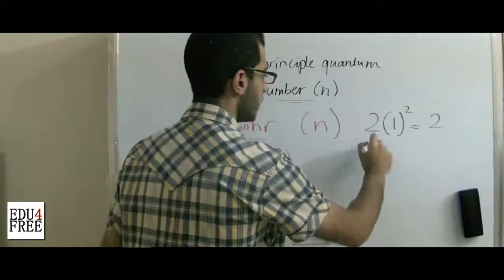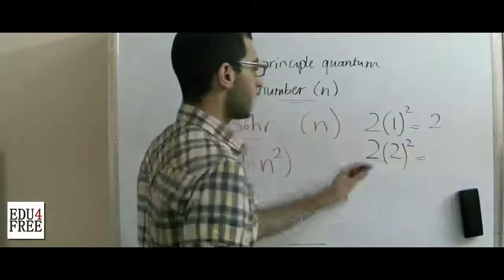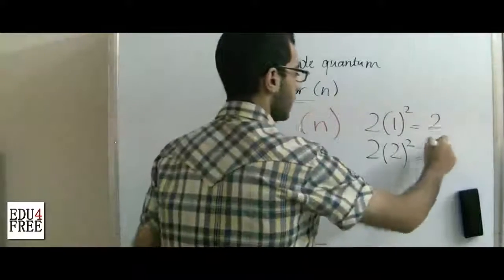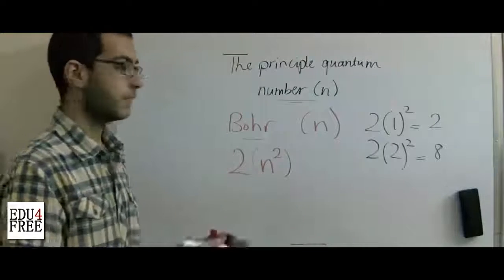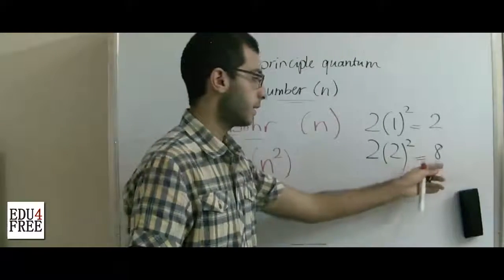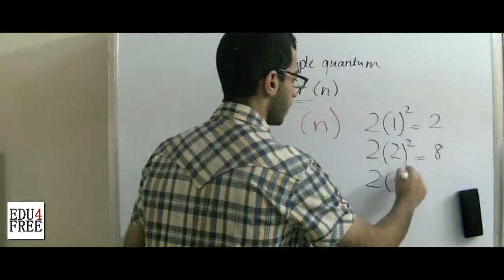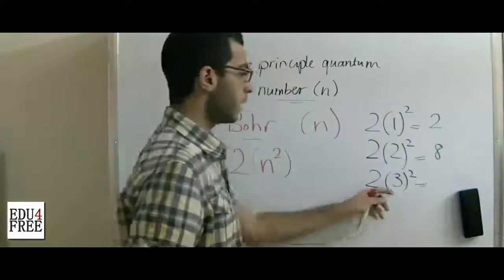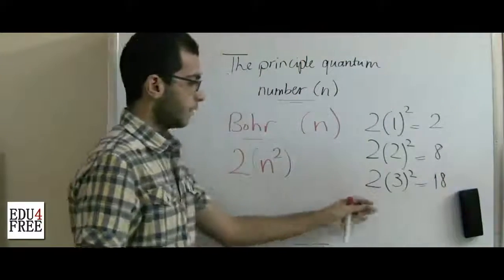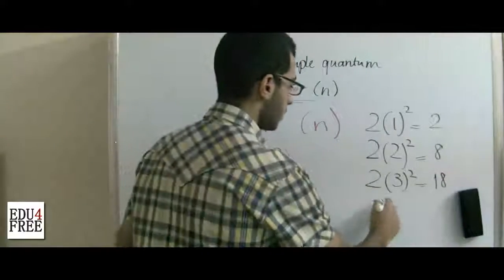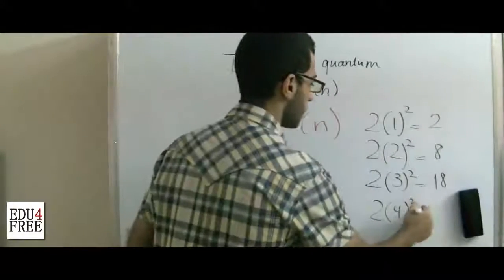The second energy level: 2 multiplied by 2 squared is 2 times 4, which gives 8. The third: 2 multiplied by 3 squared is 2 times 9, which gives 18. The fourth: 2 multiplied by 4 squared is 2 times 16, which gives 32.